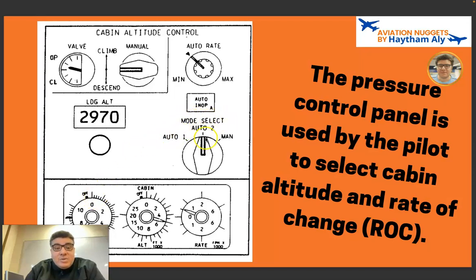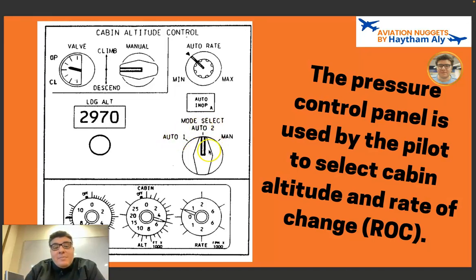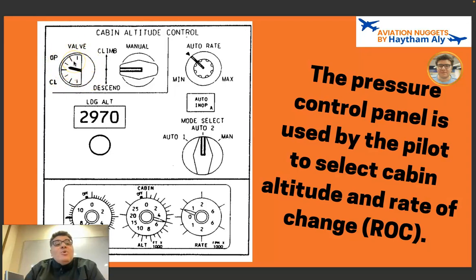The pilot has limitations for both positive and negative differential pressure. There is also a mode select knob with auto one, auto two, and manual modes. Auto one is cabin pressure controller one with motor one; auto two is cabin pressure controller two with motor two. If both auto controllers fail, the pilot can manually control the outflow valve by placing the selector on manual and using the manual selector knob. From the panel, the pilot can also monitor the outflow valve position indicator and select the cabin rate of change.